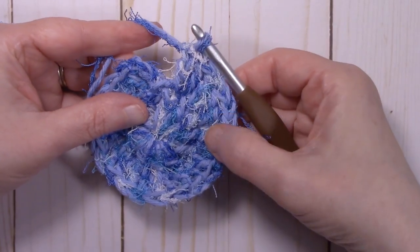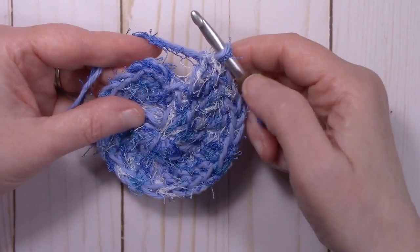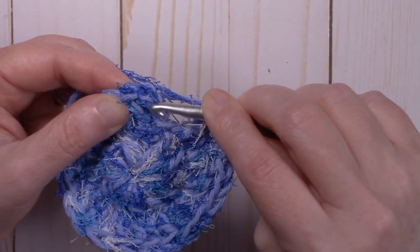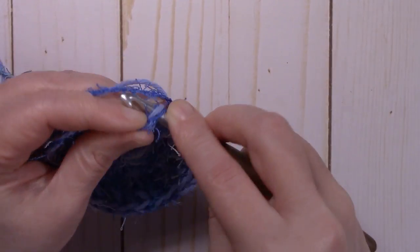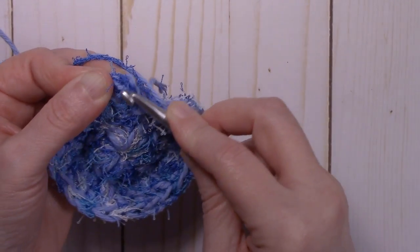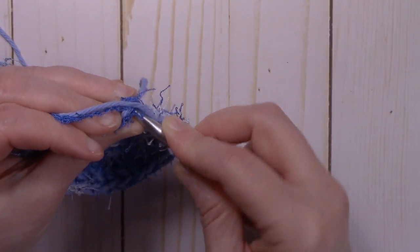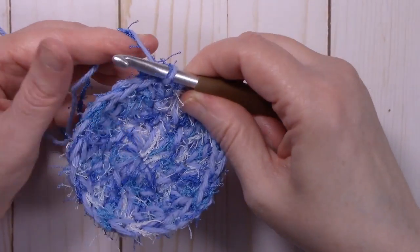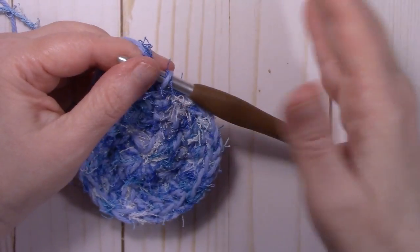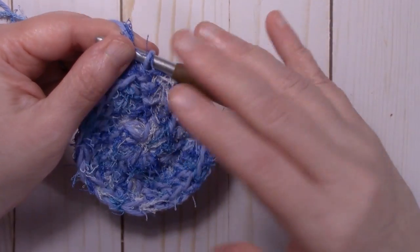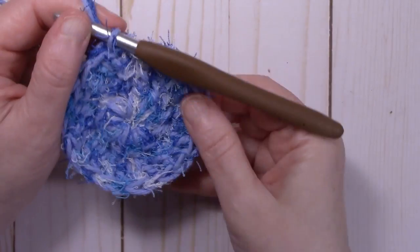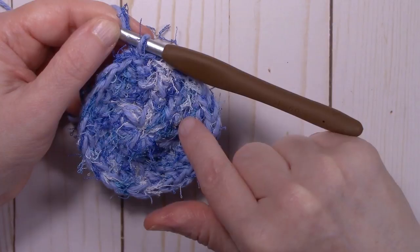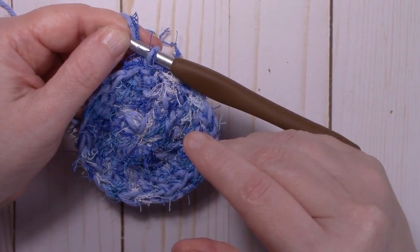At the end of round two, we now have 24 double crochet. We're going to slip stitch to the top of that chain three right here. Just go ahead and stick your hook in there. If you can get under both the loops, that's great. But if you can't, that's fine too. Just go ahead and slip stitch to it. If you have 23 double crochet, if you have 25 double crochet, that's okay. Remember, we're making a dish scrubby. These are difficult stitches to see, so if you've missed one or added one extra, it's okay.